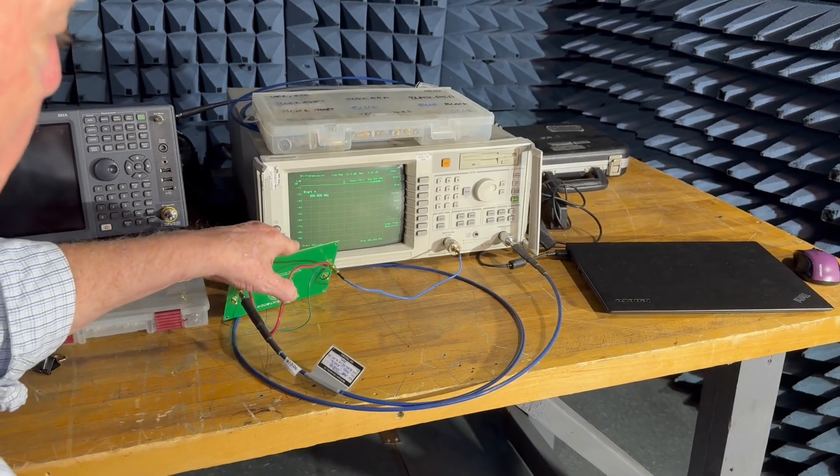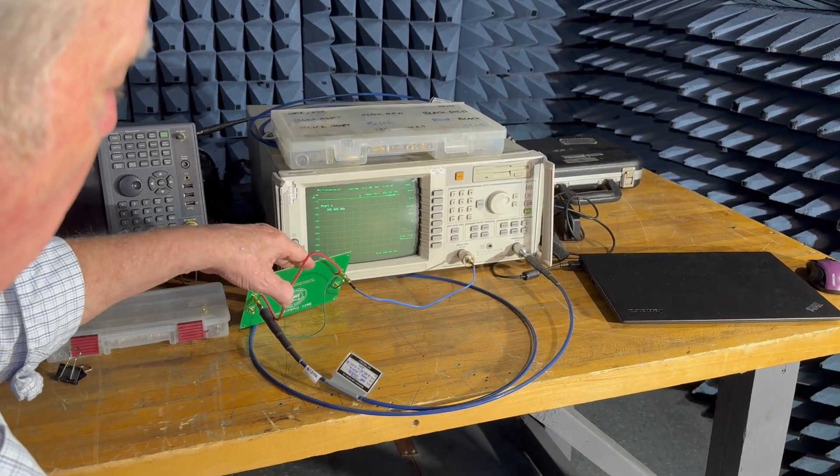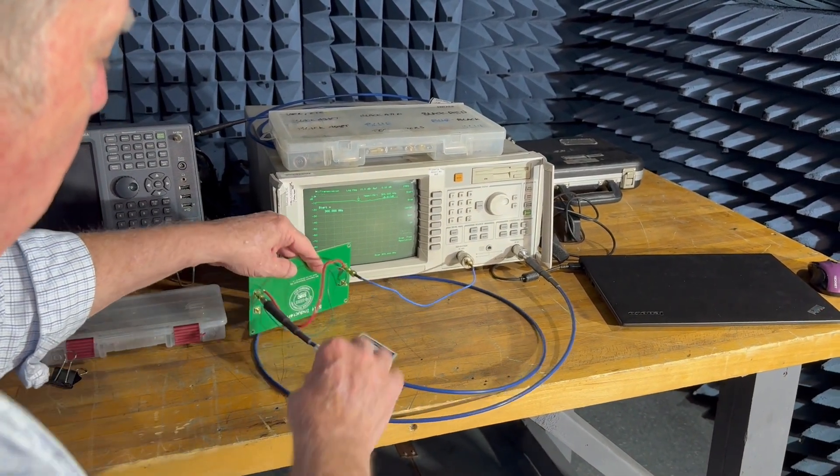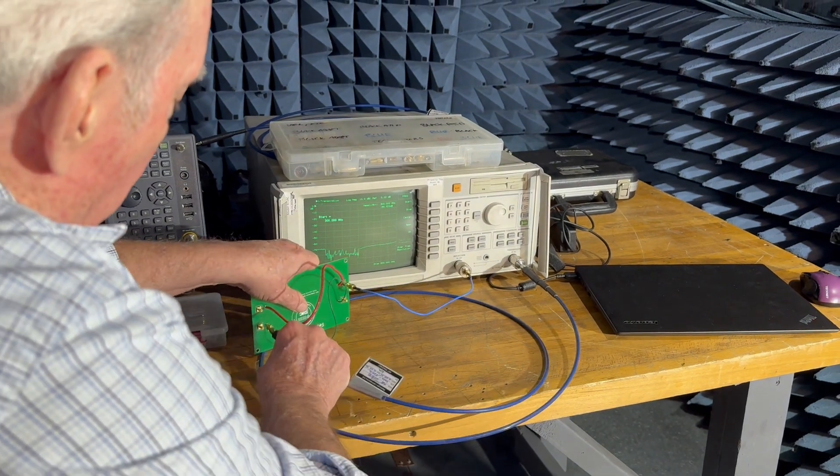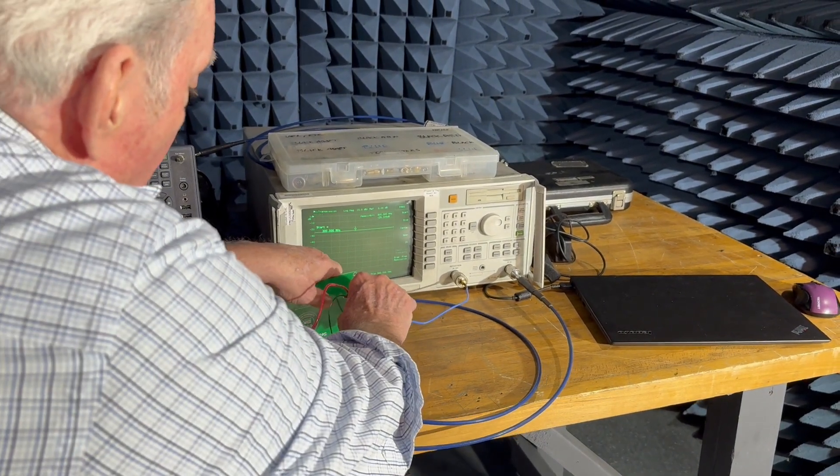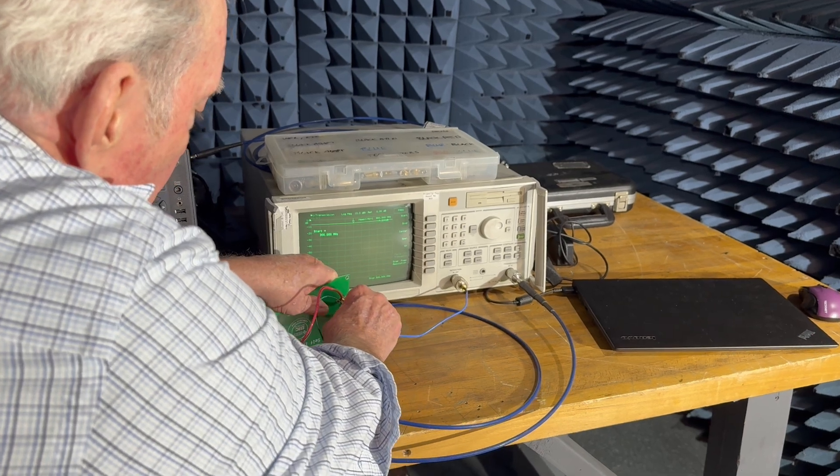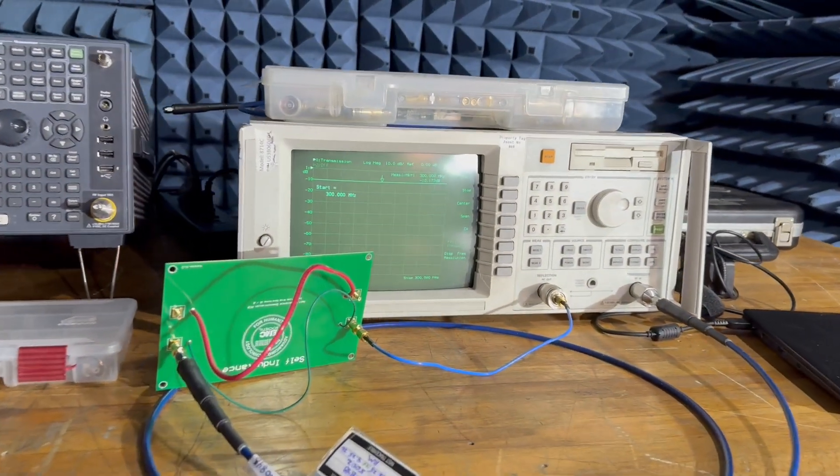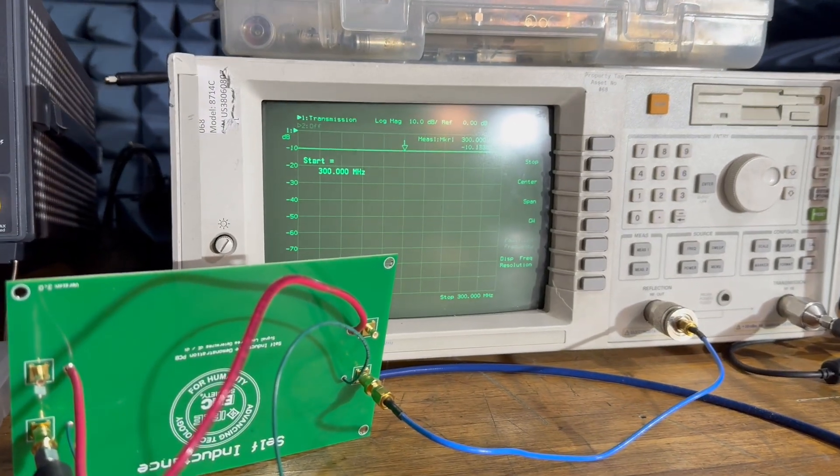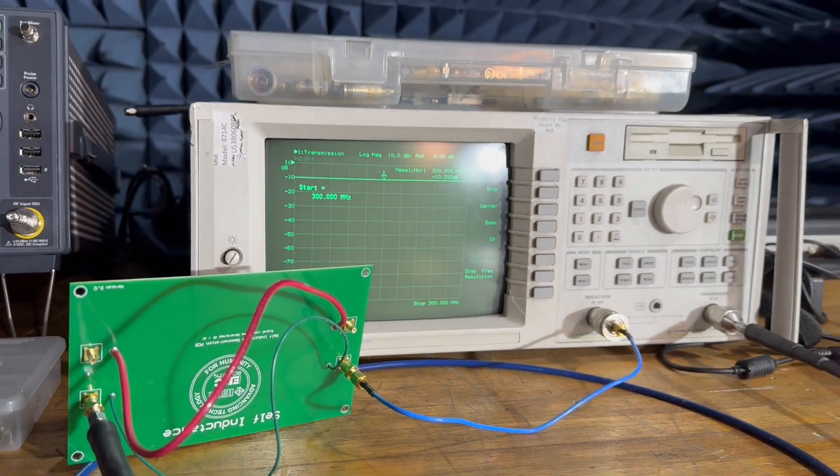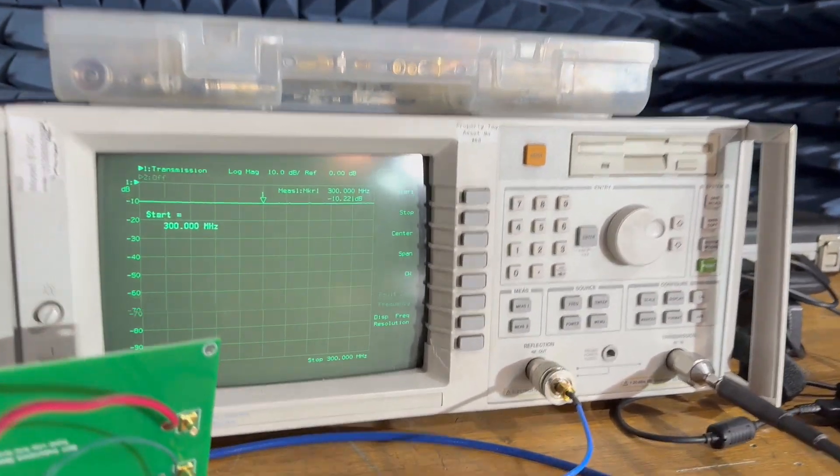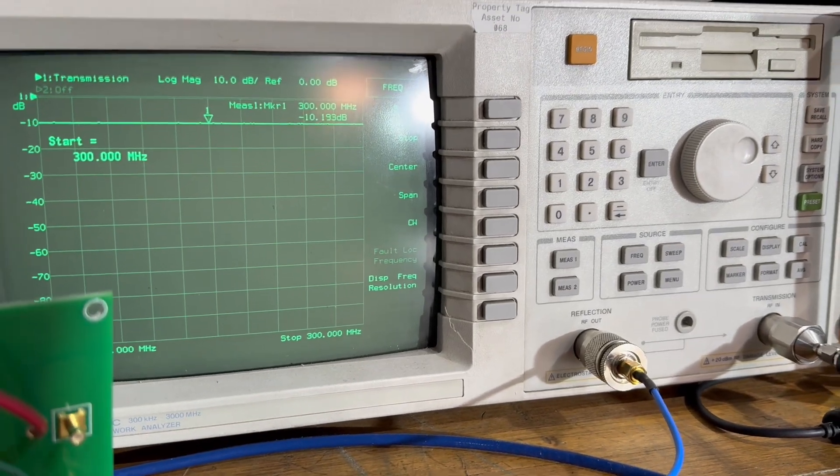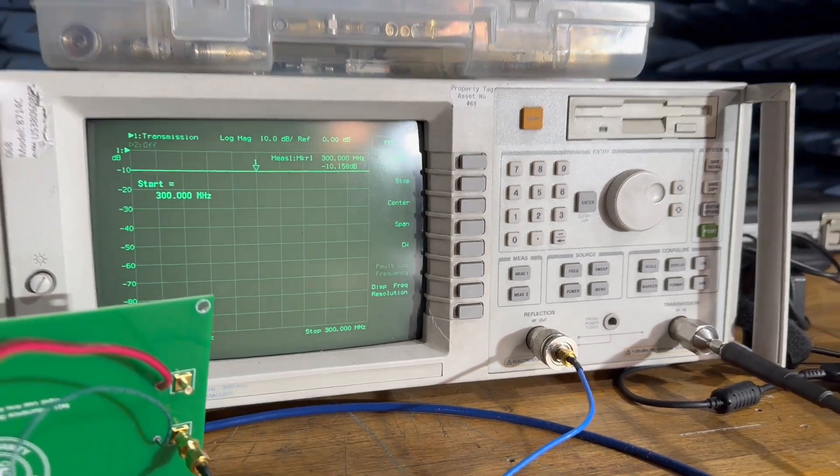If I take and look at the smaller wire, theory would say or people would say that this is more inductance. But if you look at the number there, we've got about one dB difference over 10 dB loss that we're getting.